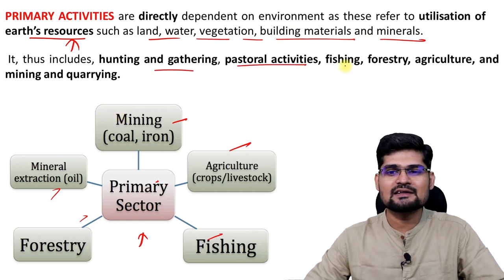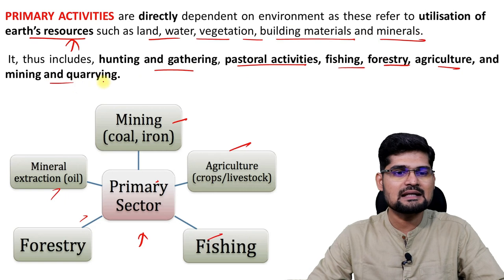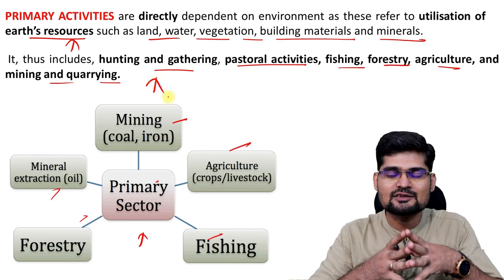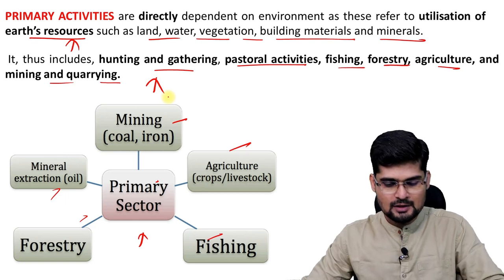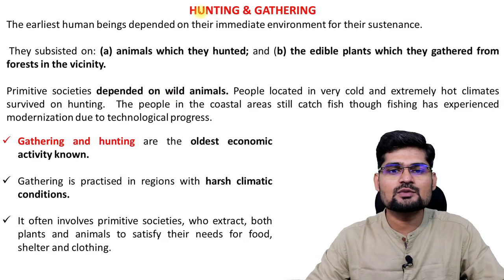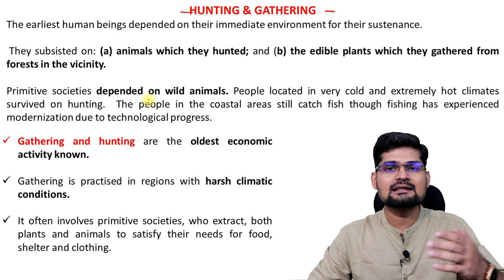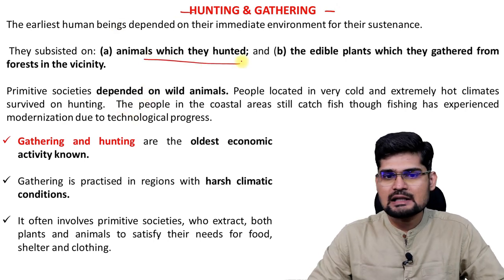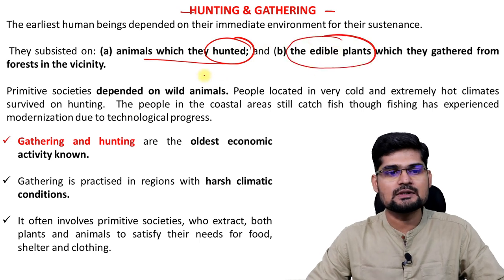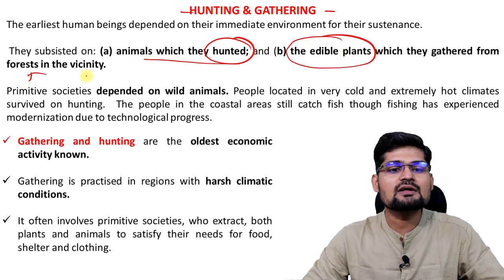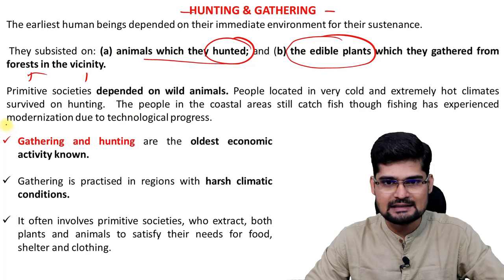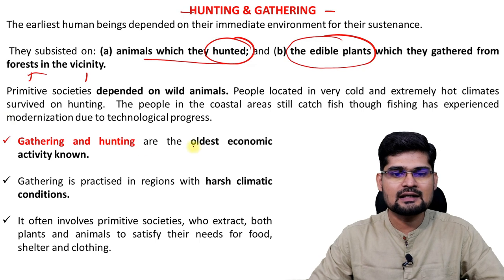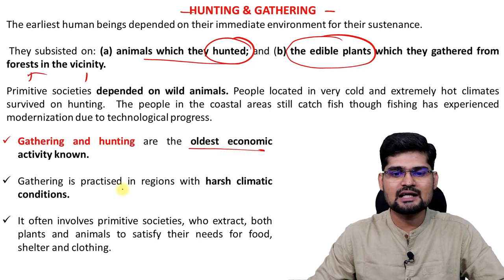Hunting and gathering, pastoral activity, fishing, forestry, agriculture, mining and quarrying — these things have been part of the primary sector of economy since its inception. Animals which were hunted and the plants which were edible were gathered from the forests in vicinity under hunting and gathering. That was the most primitive form of economic activity. Gathering and hunting is the oldest economic activity as we know.